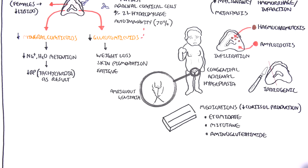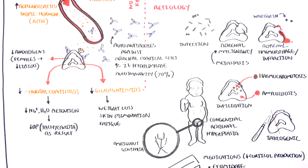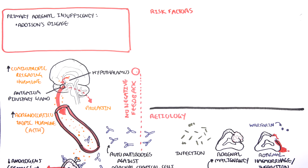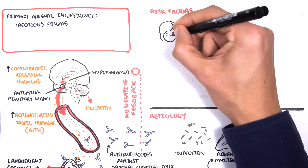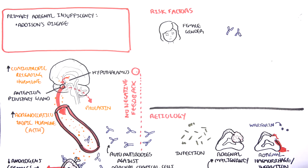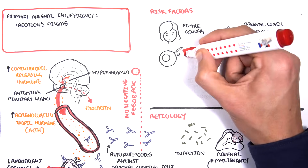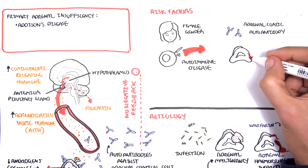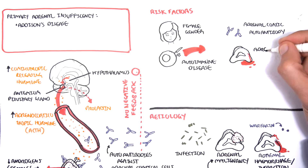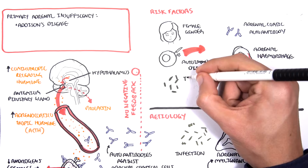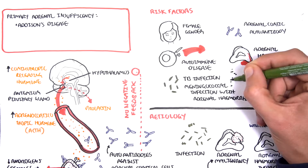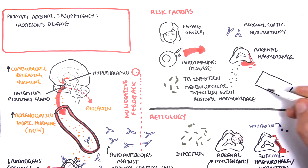Some of these drugs are usually used to treat Cushing's syndrome. Risk factors for Addison's disease include female gender, as most autoimmune diseases tend to occur in females; having an autoimmune disease; adrenal cortex autoantibody production; adrenal hemorrhage; tuberculosis infection; meningococcal infection with adrenal hemorrhage; and of course, using medications that can induce Addison's disease.